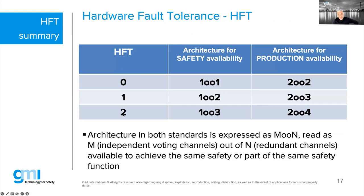HFT of 0 can be built with a 1oo1, but it means no safety redundancy — one dangerous failure and the function cannot go to the safe position. HFT of 1 requires a 1oo2. HFT of 2 requires a 1oo3. If you also want to maintain production availability on top of safety availability, you go to 2oo2, 2oo3, or 2oo4. Architecture in both standards is expressed as MooN — M stands for the independent faulting channels, N for the redundant channels available to achieve the safety function.